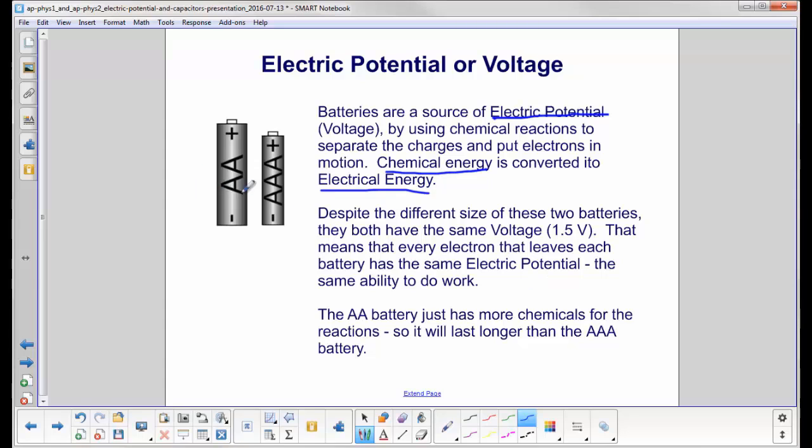Despite the different size of these two batteries, here's a AA, here's a AAA which is smaller, they both have the same voltage, 1.5 volts. That means that every electron that leaves each battery has the same electric potential, the same ability to do work, the same potential energy per charge. The AA battery just has more chemicals, it's bigger, so it can have more reactions, so it will last longer than a AAA battery.